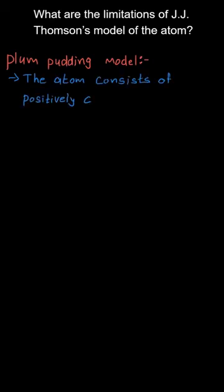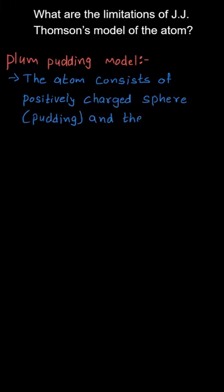He suggested that the atom consists of a positively charged sphere called the pudding, and he suggested that electrons are randomly distributed as plums which are embedded inside this pudding.